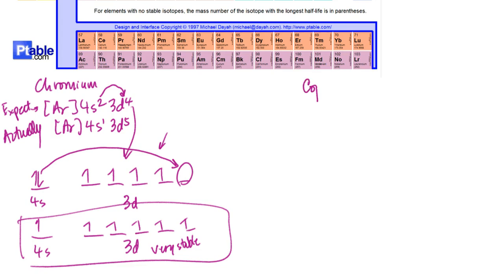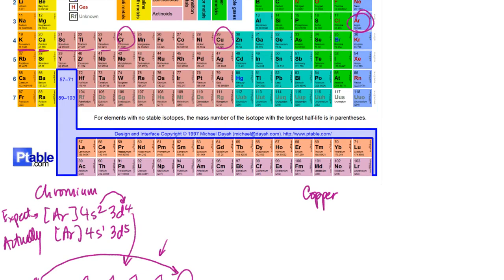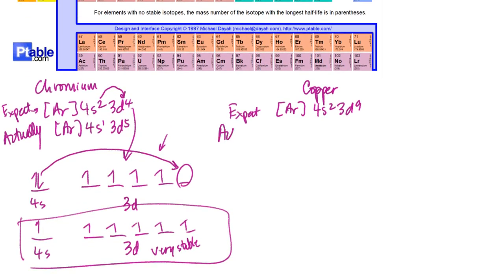Something similar happens if we consider copper. If I take a look at copper in the periodic table, again the preceding noble gas would be argon and we would expect that the configuration would be 4s2 and then 1, 2, 3, 4, 5, 6, 7, 8, 9. So 3d9. But what we really get is 4s1, 3d10.